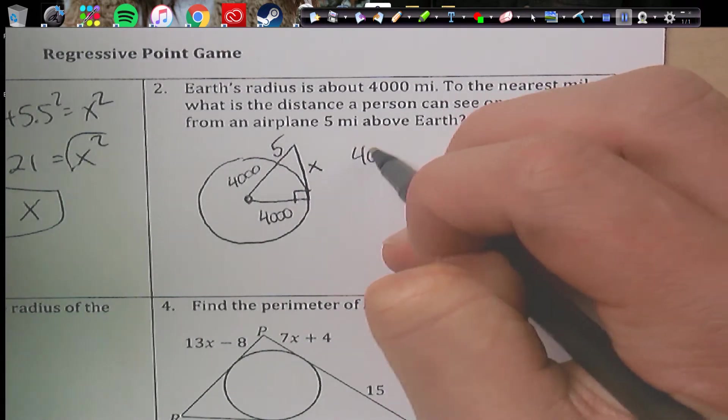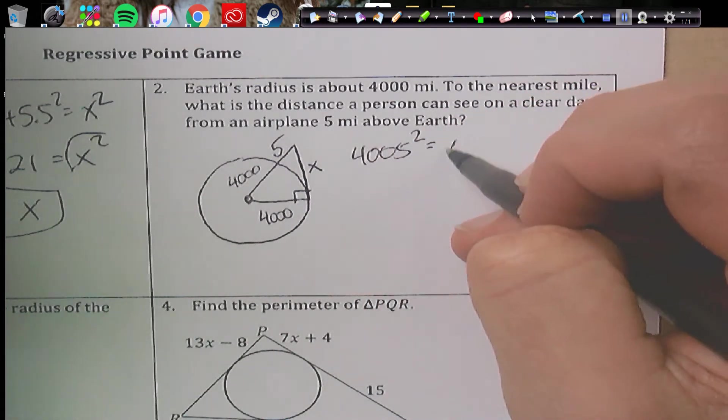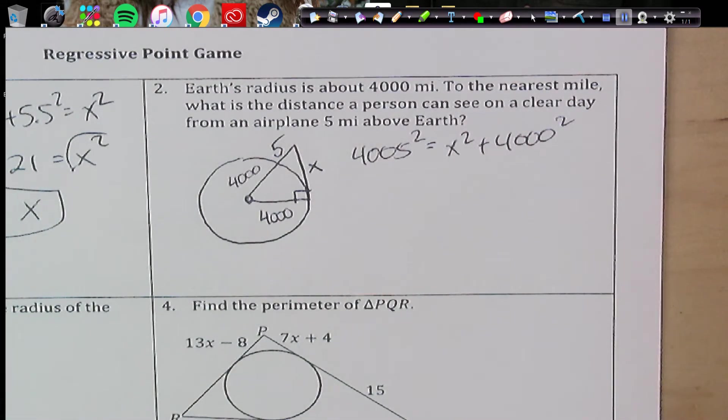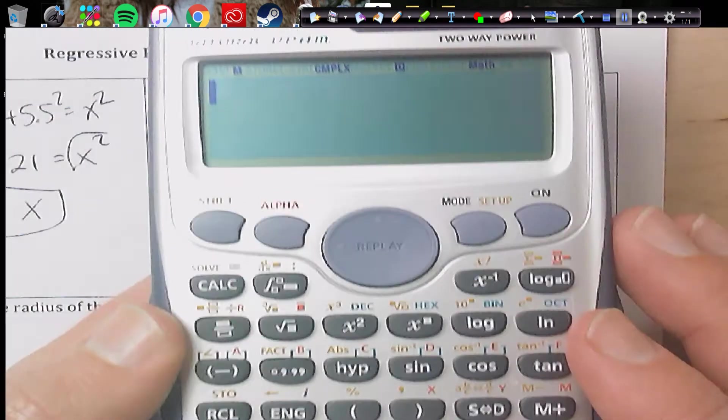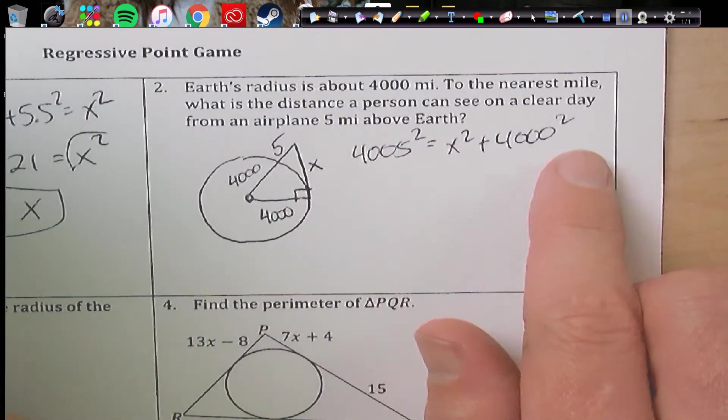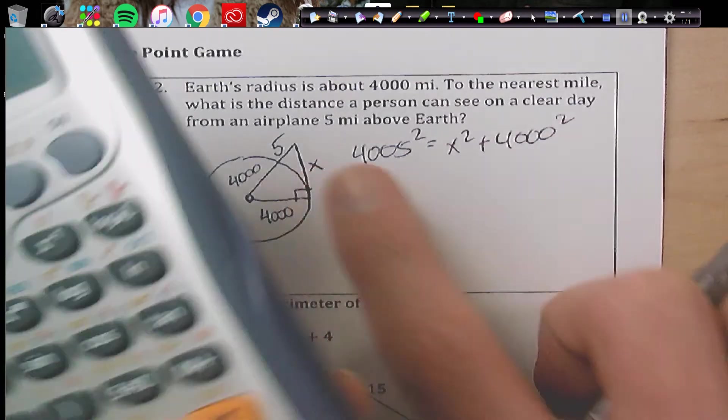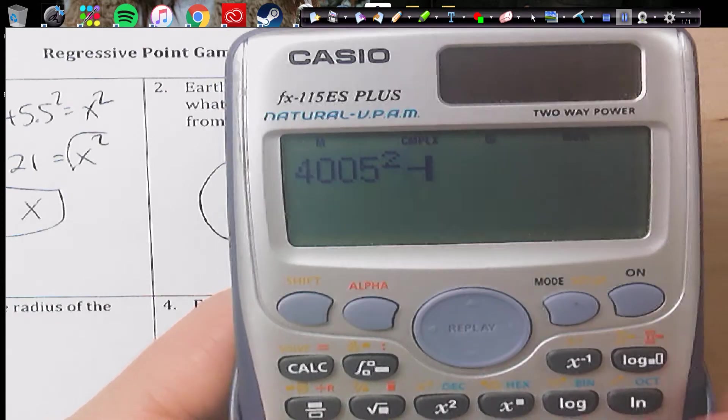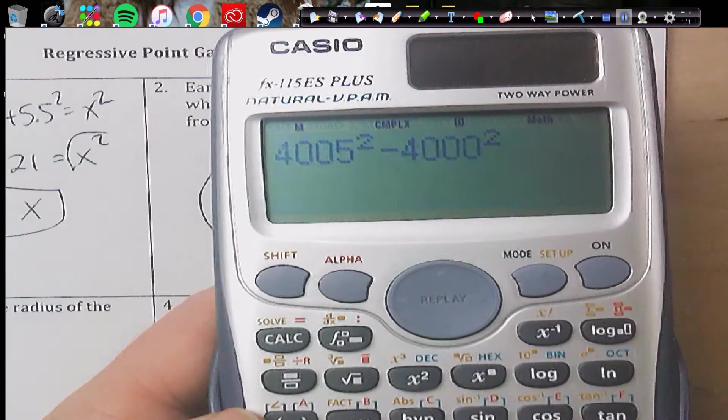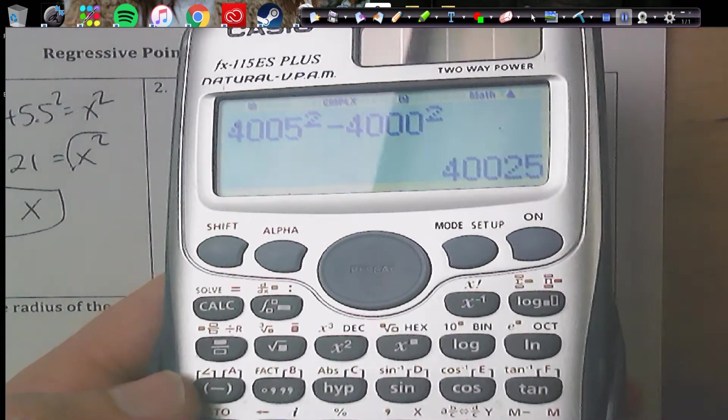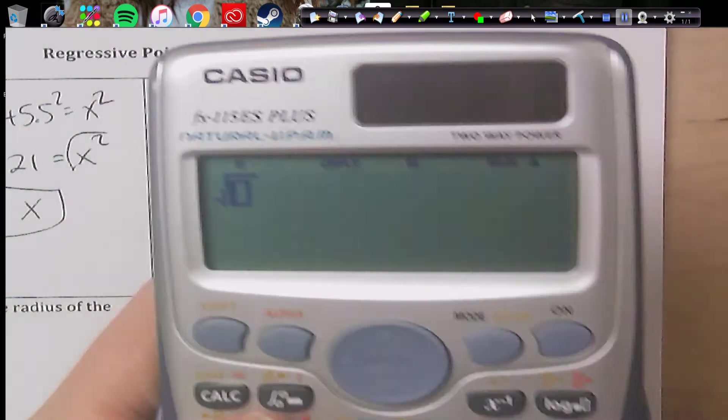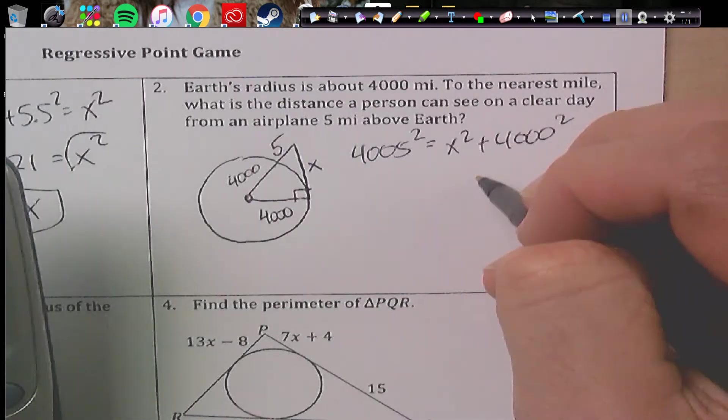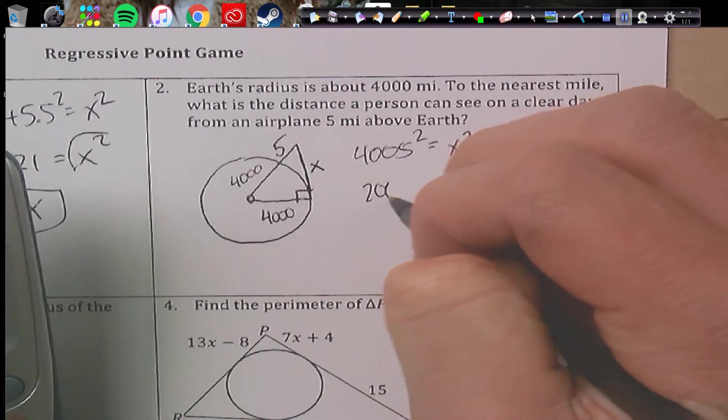We're going to get 4,005 squared equals x squared plus 4,000 squared. And so I like to just do my calculator. I'm going to kind of just show you what I do in my calculator here. Since I have this piece and this piece, I'm going to subtract the 4,000 squared from the 4,500 squared. So we get the 4,500 squared minus 4,000 squared. And I get this number, 4,025.